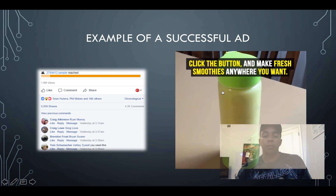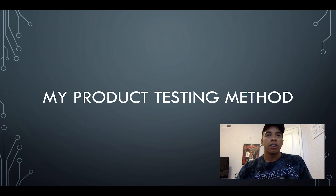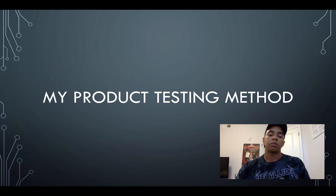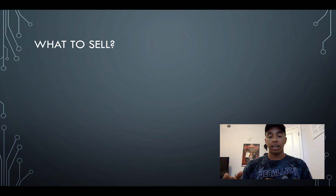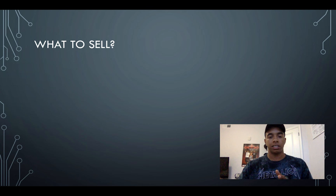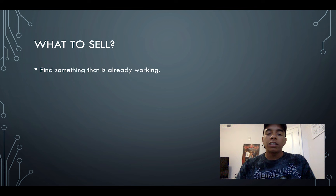We're going to talk more about why that's a quality advertisement and how you can make one yourself. So first I want to talk about my product testing method. You have to figure out something to sell. I'll be making a more detailed product research guide down the line, but for now this should be enough to find that first product. You should find something that is already working, especially if you're just starting out.